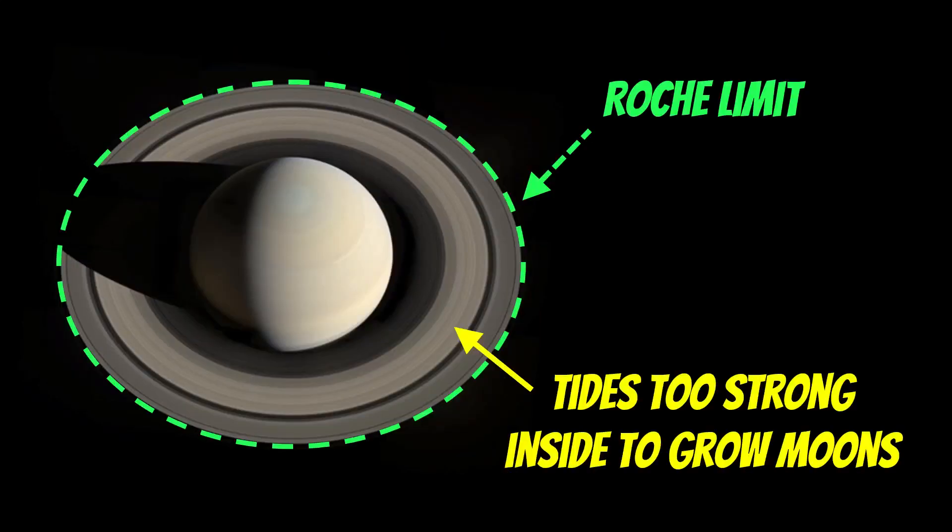So here, right at the edge, it's pretty much the Roche limit for water ice, and anything inside that, the tides are too strong to grow moons. So it kind of makes sense that you've got this ring system there. You haven't got moons, or technically there are some moons already in there, but they're not necessarily made of water ice.